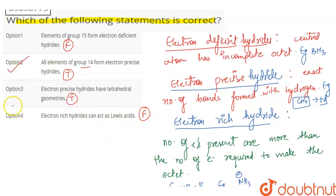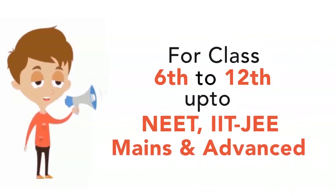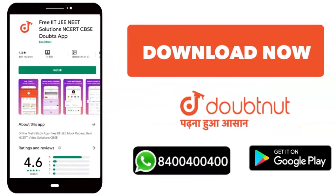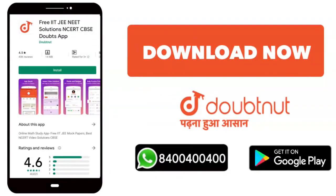So this is why option 2 and option 3 are correct. Thank you. Class 6 to 12 and NEET, IIT, JEE. Join 10 million students today. Download Doubtnet or WhatsApp 844-944-4455.